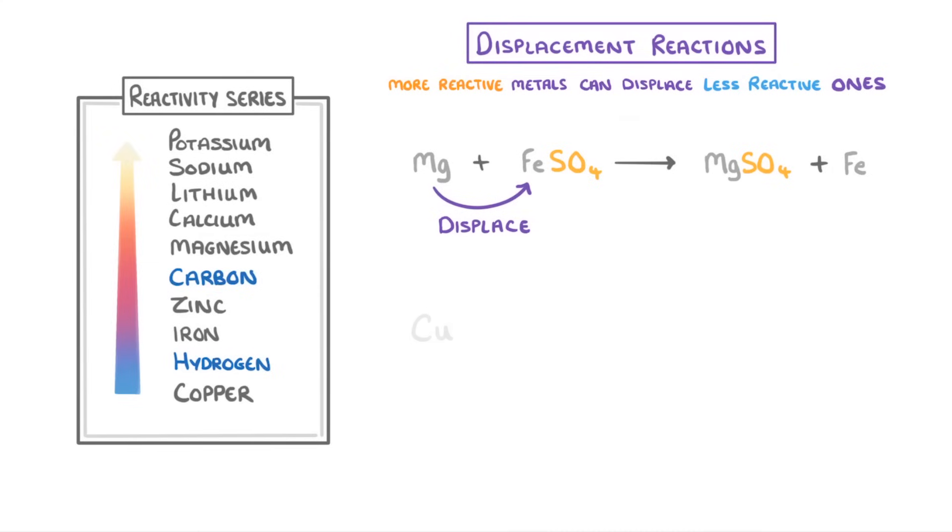Whereas, if we added copper to a solution of iron sulfate, then nothing would happen, because copper is less reactive than iron, so can't displace it.